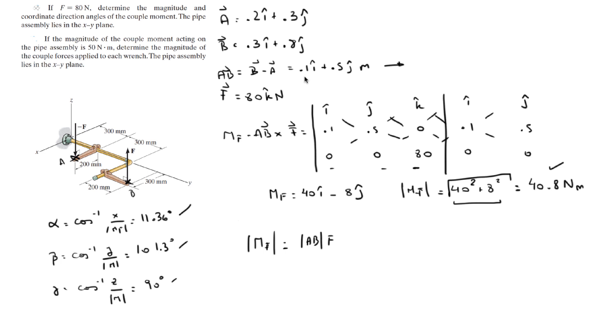Square root of the square of 0.1 plus the square of 0.5, all that square rooted, and you're going to get that the magnitude is equal to 0.509.